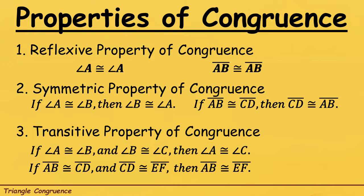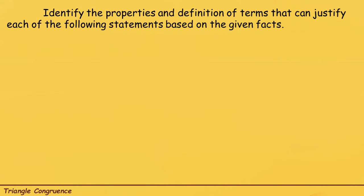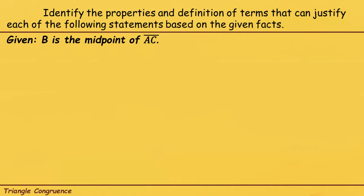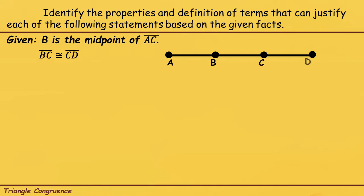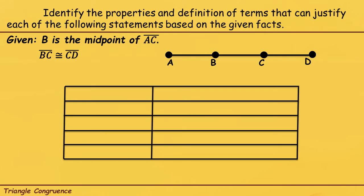So for us to understand it better, let's have an example. Identify the properties and definition of terms that can justify each of the following statements based on the given facts. The given here is: B is the midpoint of line segment AC, and line segment BC is congruent to line segment CD. We will have columns for statements and reasons — specifically 4 statements and 4 reasons for this activity.